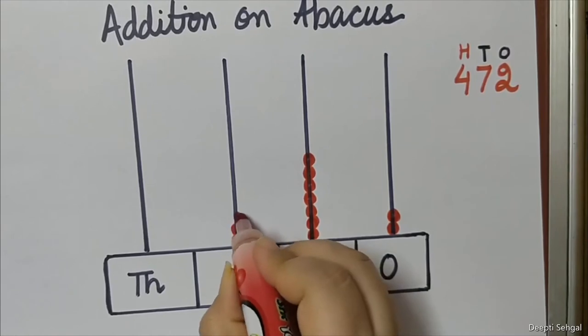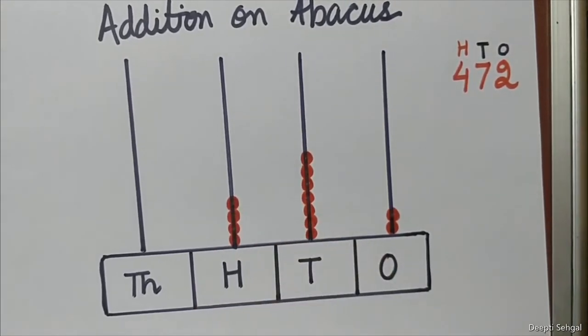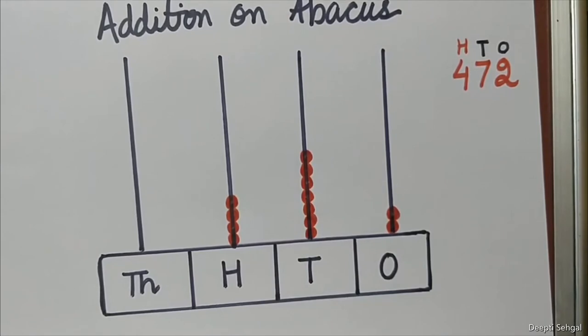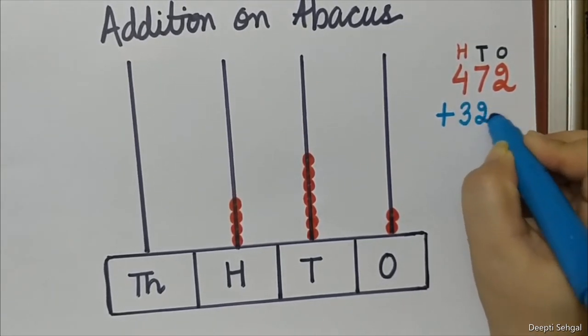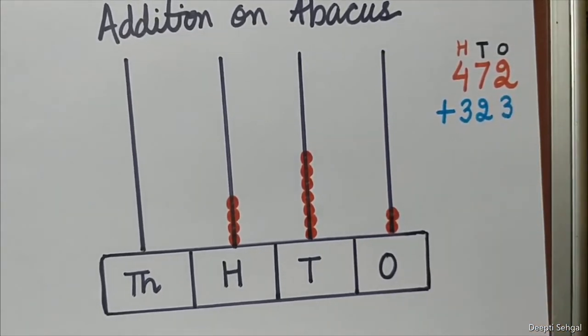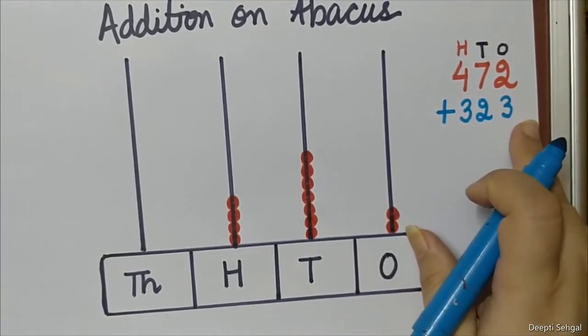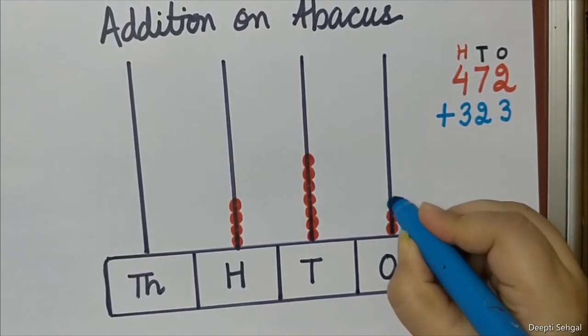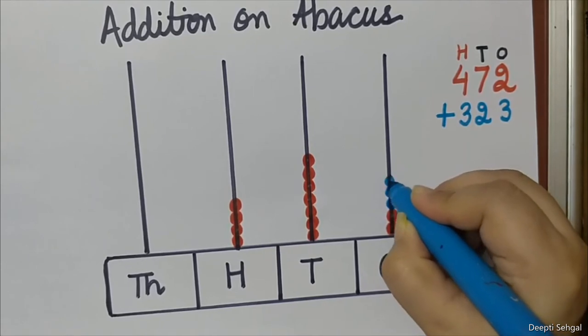Now if I have to add 323, how many ones am I adding? I am adding 3 ones.